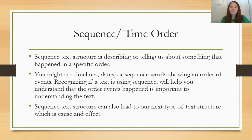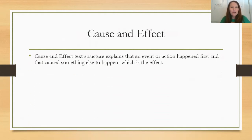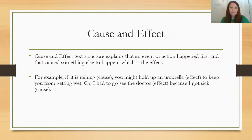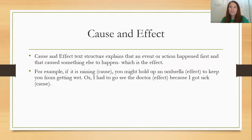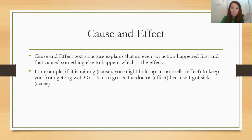Sequence text structure can also lead to our next type — cause and effect. Cause and effect text structure explains that an event or action happened first and that caused something else to happen, which is the effect. For example, if it is raining — the rain is the cause — you might hold up an umbrella to keep from getting wet. Holding up the umbrella is the effect. The rain happened first, making you hold up the umbrella.